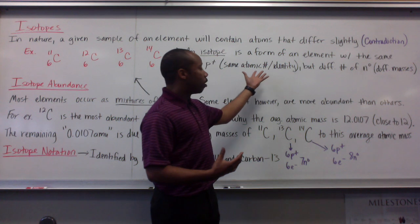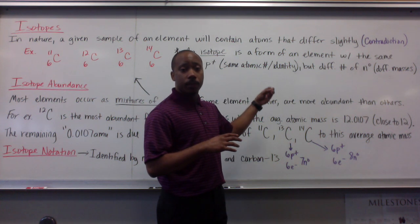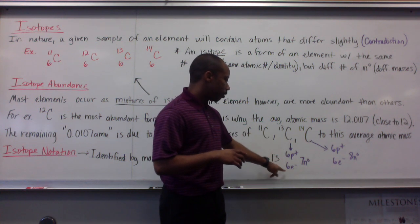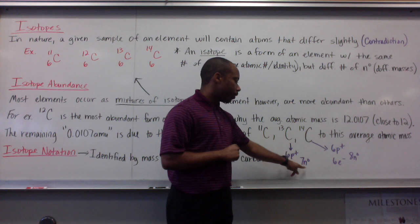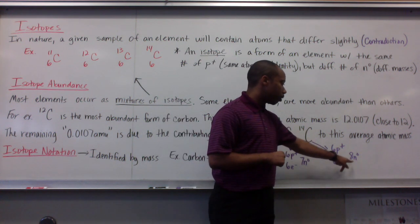And how they differ again? By definition, isotopes are atoms that have the same number of protons, but different number of neutrons. And we can see that here. Carbon 13 has six protons, six electrons, but seven neutrons. Carbon 14, six protons, six electrons, eight neutrons.